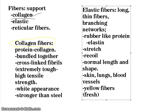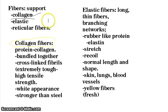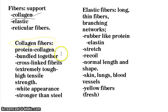To revise: fibers help provide support and are of three kinds — collagen, elastic, and reticular. Collagen fibers consist of the protein collagen; they are bundled together with cross-linked fibrils, making them extremely tough with high tensile strength. They appear white when fresh and are stronger than steel.